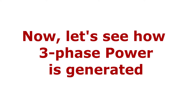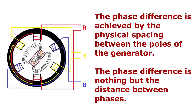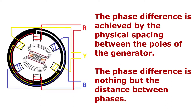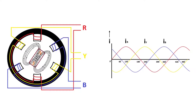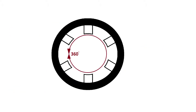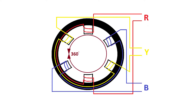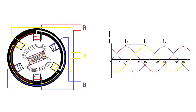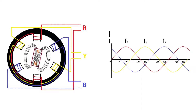Now let's see how three-phase power is generated. The phase difference is achieved by the physical spacing between the poles of the generator. The phase difference is the distance between phases, and this distance causes a time difference between peak values of the power, which in turn causes the phase difference. As we know, this complete peripheral distance is 360 degrees — an angular distance. If we accommodate three coils at an equal distance, each coil is set at 120 degrees apart from the other coils. This is the phase difference between the phases, and this peripheral distance is the cause of the time difference between the peaks of the three-phase current.